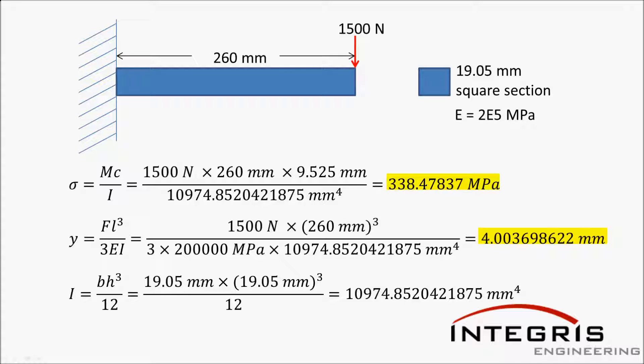The simple cantilever beam model is shown above. It is a simple square beam, 19.05 mm square, 260 mm long. One end is fixed completely, and the other end has a 1500 newton load applied in the vertical direction. The standard textbook equations are shown below.